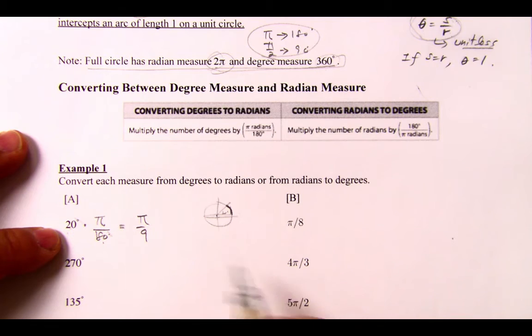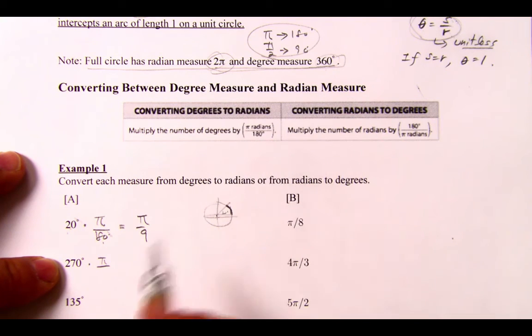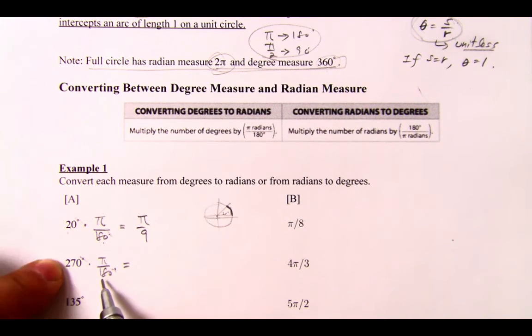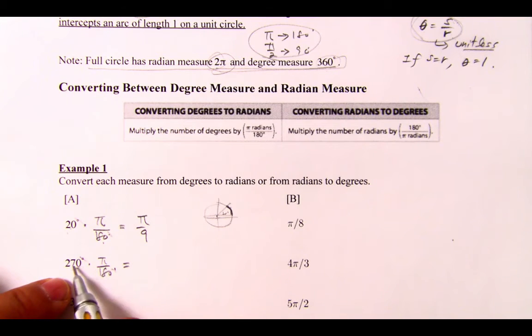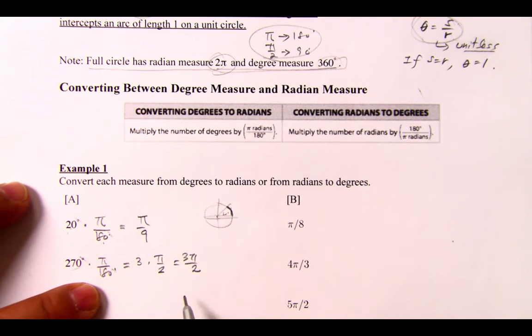If it's 270 degrees, we multiply by the converting fraction. It says π is equal to 180 degrees. The degrees cancel. And then you ask yourself, 90 goes into 270 three times. 90 goes into 180 twice. So that's equal to 3π over 2.